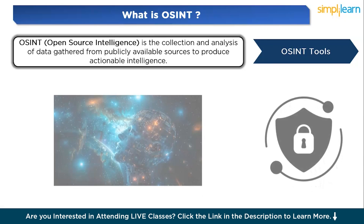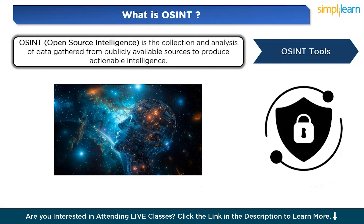OSINT stands for open source intelligence — the collection and analysis of data gathered from publicly available sources to produce actionable intelligence. A security analyst might use OSINT to find if an employee's credentials have been leaked online or to map an attacker's digital footprint. Common sources include search engines, social media, forums, public databases, and government records. OSINT is used by cyber security professionals, law enforcement, journalists, business researchers, and HR recruiters.